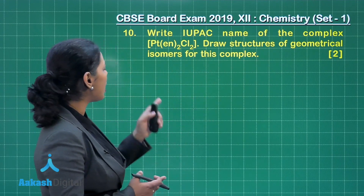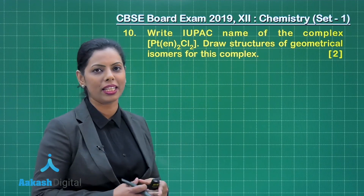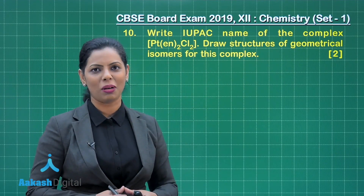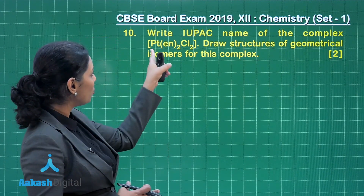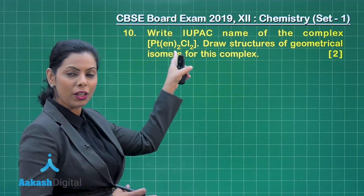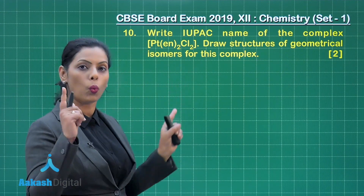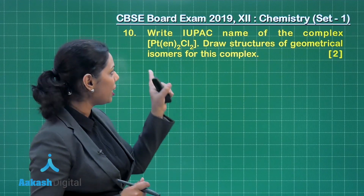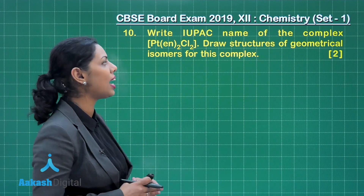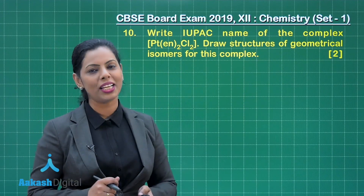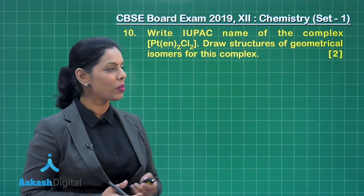Draw the structure of geometrical isomers of this complex. This is a 2-mark question. You have to write the IUPAC name, which will give you 1 mark. And if you draw the correct geometrical isomers of this complex, you will obtain 1 mark.